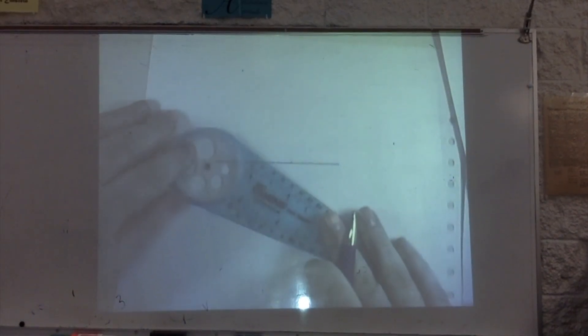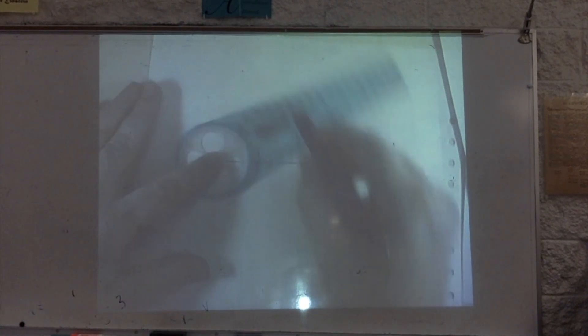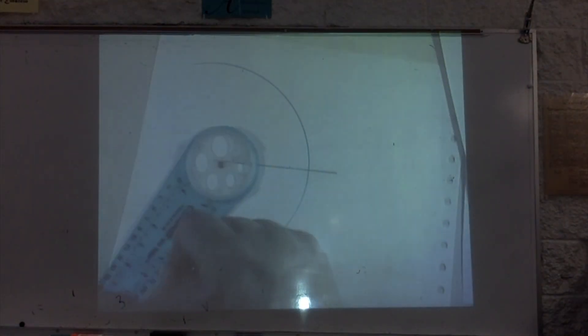To construct a perpendicular bisector, you're going to put the middle part of the compass on one end of the segment, and then you've got to make an arc. You've got to go more than halfway.